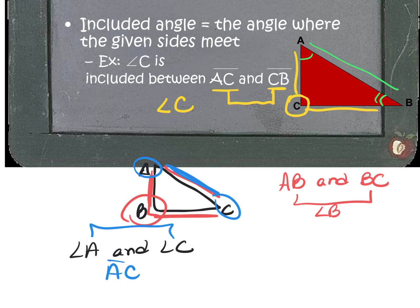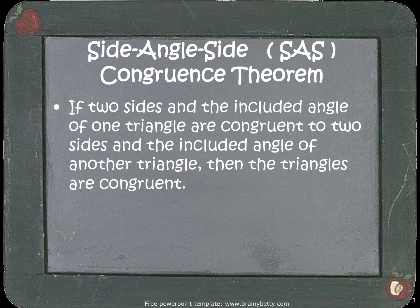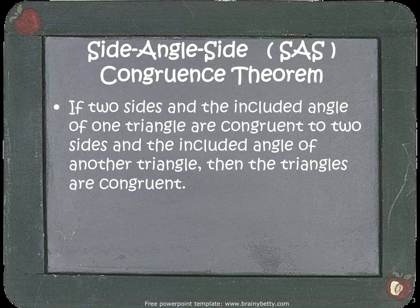Now we're going to see the theorem using this terminology. For this theorem, we're only talking about the included angle — we'll use the included side for a different shortcut. Here is the official side angle side congruence theorem. The acronym you can use as a reason in your proof is SAS. The theorem states: if two sides and the included angle of one triangle are congruent to two sides and the included angle of another triangle, then the triangles are congruent. So instead of looking for six different pieces, we only need two sides and the included angle with congruency marks.